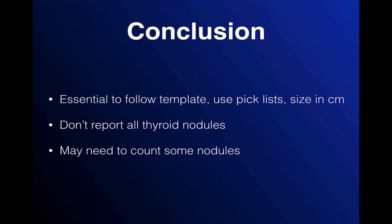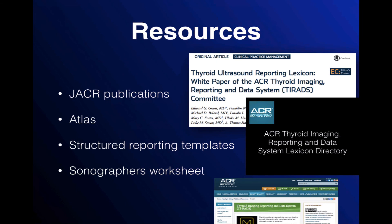In conclusion, I've taken you through the structured reporting templates for this thyroid ultrasound registry. We're working as a team, and you need to follow the templates so the results from your institution and the study as a whole will be valid. Use the pick list options, report size in centimeters, and don't change any field names or rearrange the order of the report. You don't need to report all thyroid nodules — there's a video on how to approach this — but you may need to count some nodules you don't report in detail: the spongiform nodules and the mixed solid cystic nodules. There are more resources available on ACR-TIRADS on the ACR website, including the publications, an atlas, a copy of the structured reporting templates, and a sonographer's worksheet.